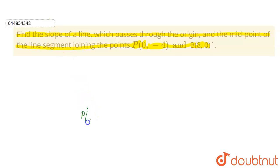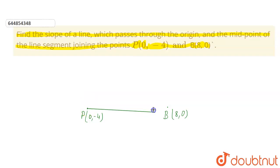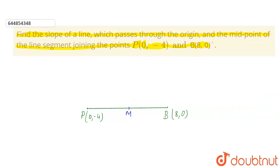We are given two points: one point is P which is (0, -4) and another point is B which is (8, 0). The line joining between these two points will look like this — this will be the line joining between these two points.